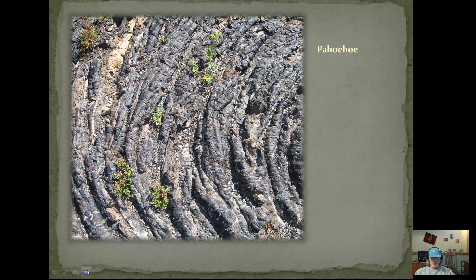The next type is called Pahoehoe, and this is Crater of the Moon National Monument in Idaho. Pahoehoe is a little less viscous, and it comes out in twisted braids and ropes. You can see it almost flows out like you were pouring batter out of a cake pan.